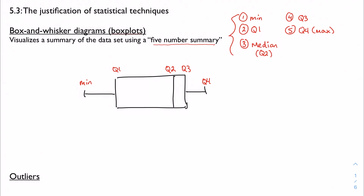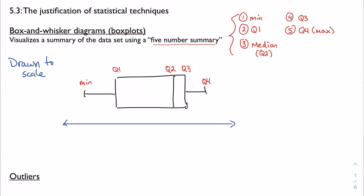So what does this do? This is actually drawn to scale, which is important — box plots are always drawn to scale. So I always want to include some sort of number line below, with a regular interval, maybe counting by tens. That way I actually show, along this number line, where the data is spread out. You can see there's a pretty wide spread of data between the quartiles, but the max and min aren't that far off from the rest of the data set.